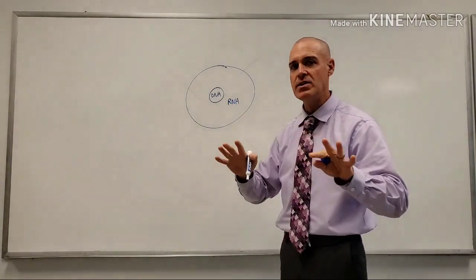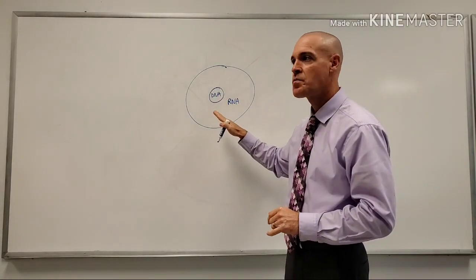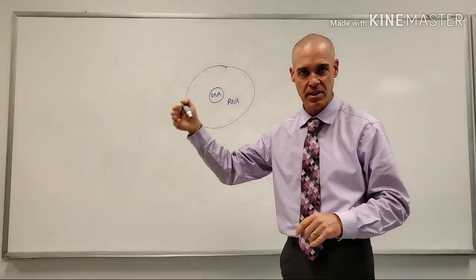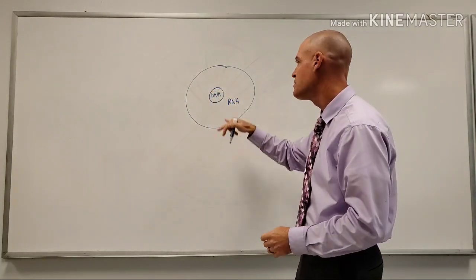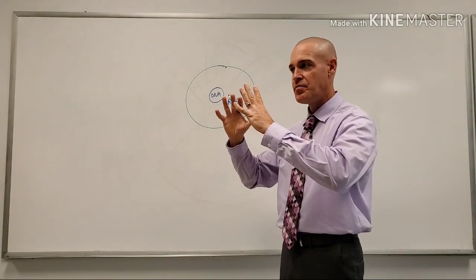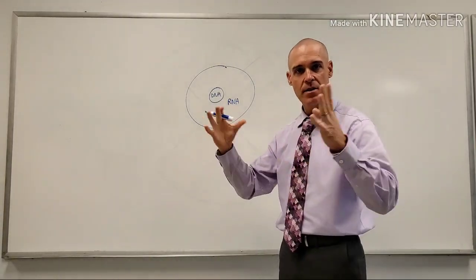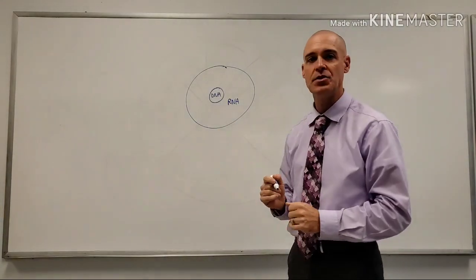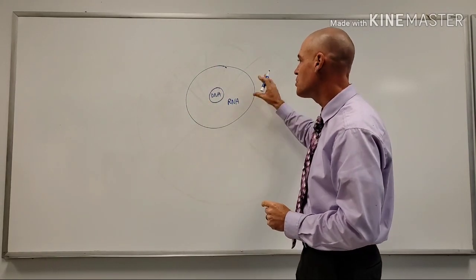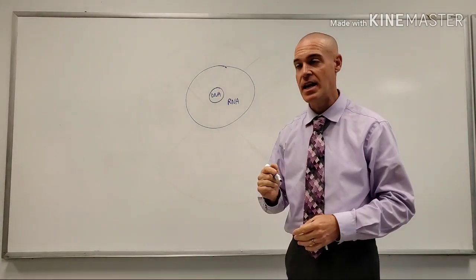So those are some real basic things. If your cells have a nucleus, then of course your DNA is going to be in the nucleus of that cell. So all of your cells with nuclei have your DNA, and of course you've got one distinct DNA for your body, obviously different from everybody else's DNA. Cells without nuclei would not have DNA.